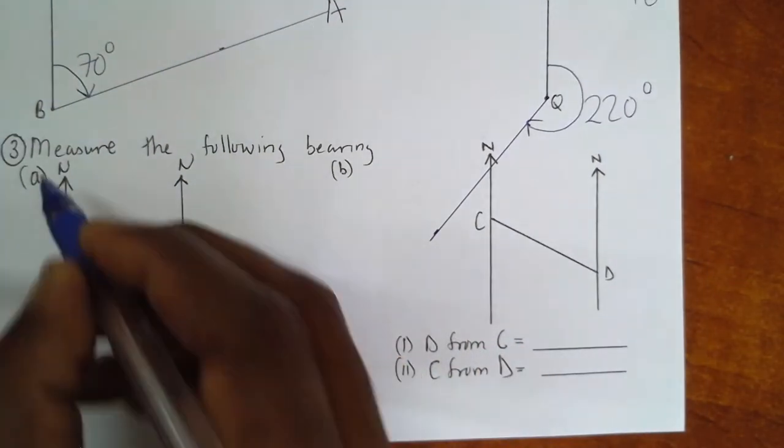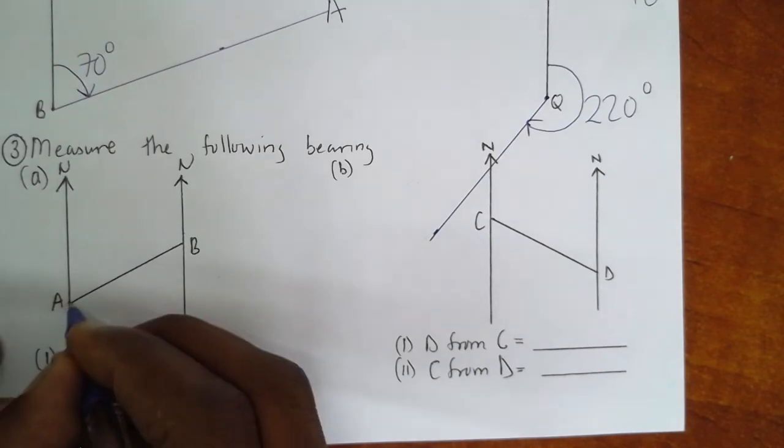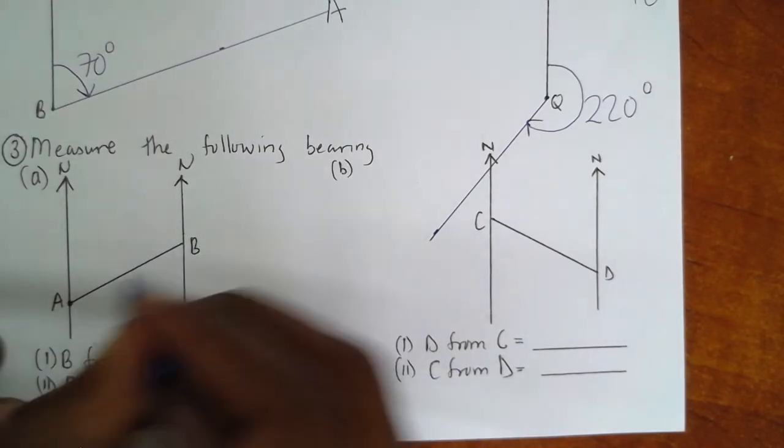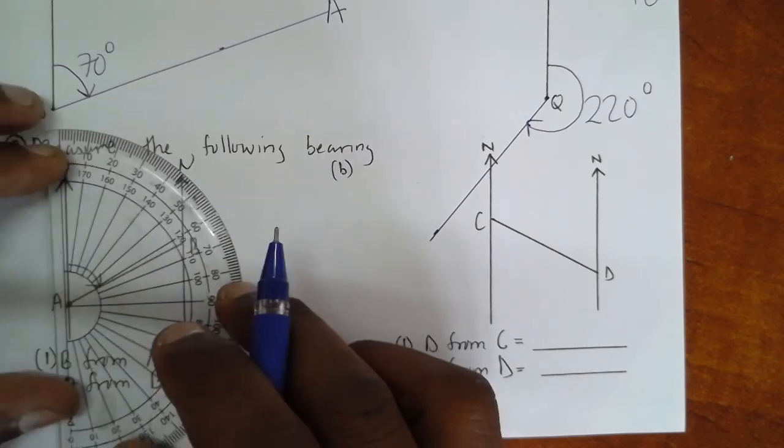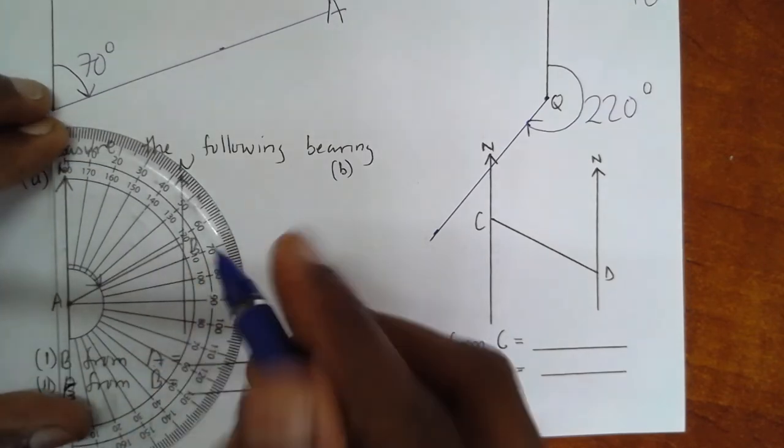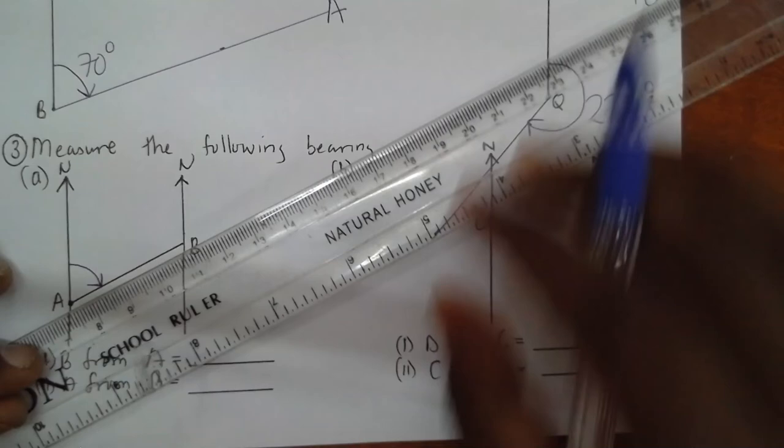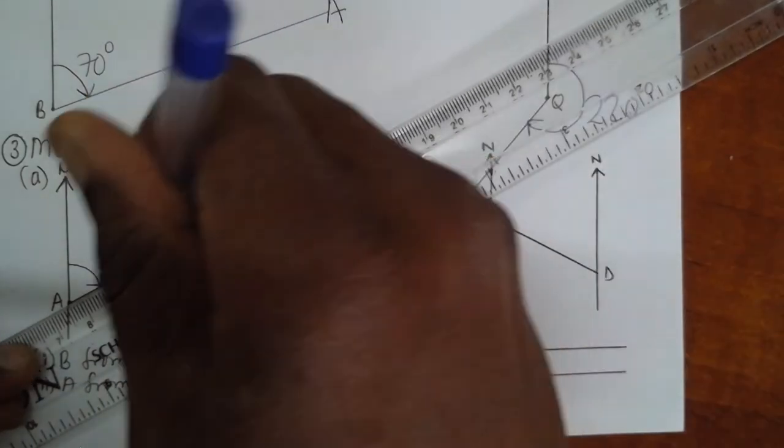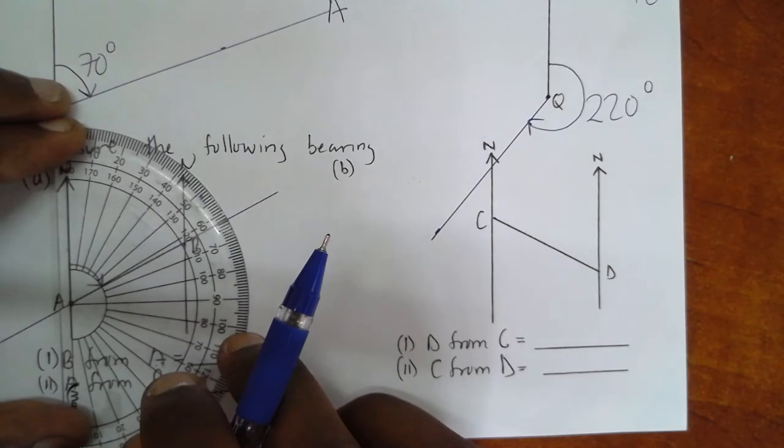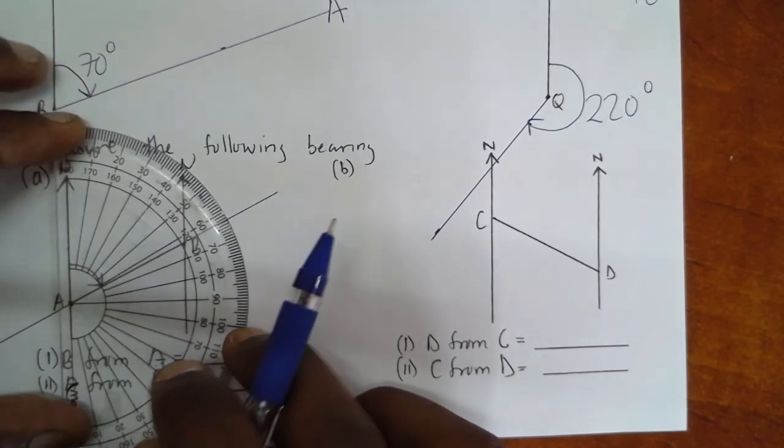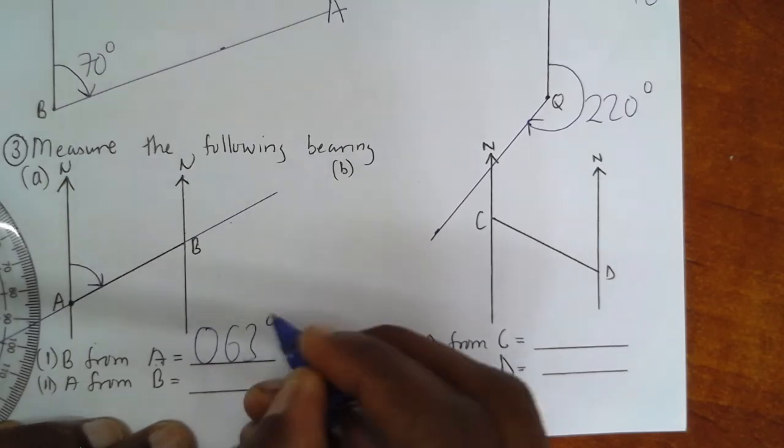Number three, measure the following bearings. B from A. It means I have to stand at A so that I can see B. So, in order for me to see B, I have to move this angle here. So, I get my protractor. I keep them. But unfortunately, it will be not easy for me to read because this line is shorter than the protractor. I can prolong the lines. Get your ruler, make sure it balances properly on the original line, and make the lines longer. So, that when you keep your protractor to measure, it can perfectly enter on the required values. So, from zero, 60, 63, meaning the answer will be 063 degrees.